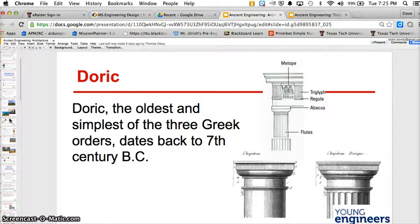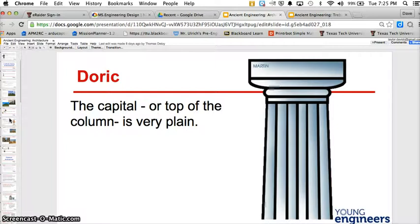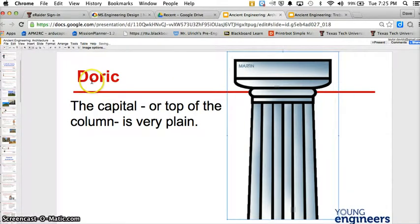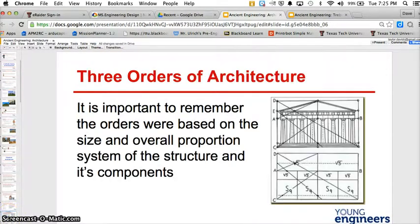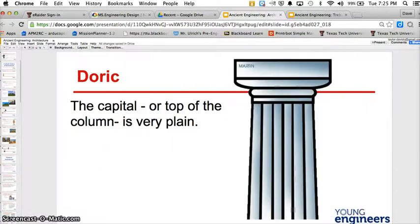Our first style is Doric. The oldest and simplest of the Greek orders dates back to the 7th century BC. The best way to look at this is the capital or the top of the column is very plain. So you can see right here.